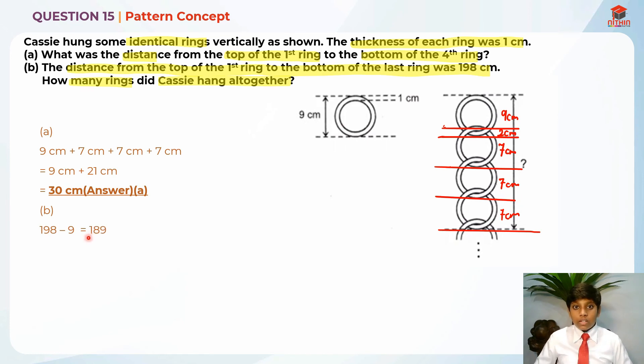So, it will give me 189 cm. So I can take 189 divided by 7, it will give me 27 rings. And don't forget to add back the first ring because we have minus it at the first. So 27 plus 1, it will give us 28 as the answer for part B.